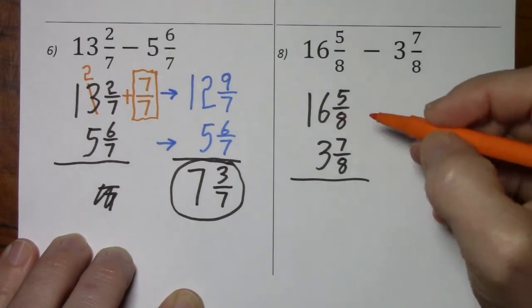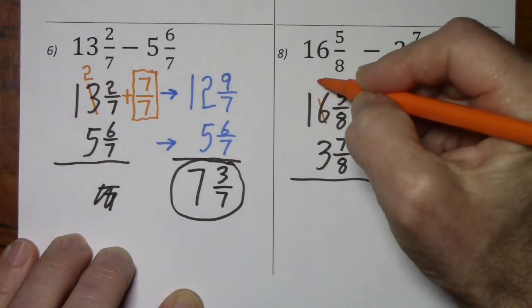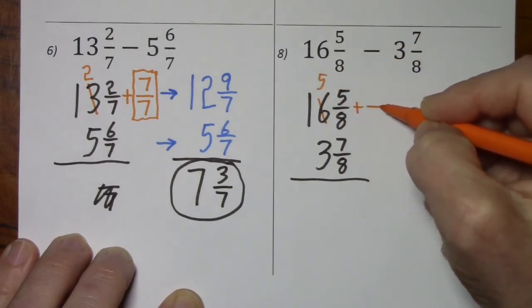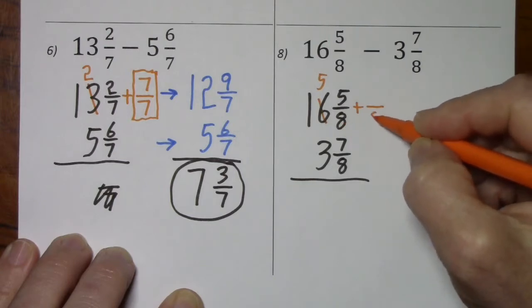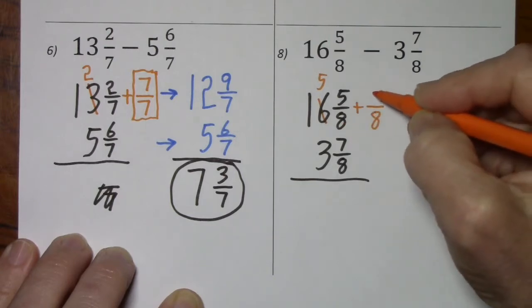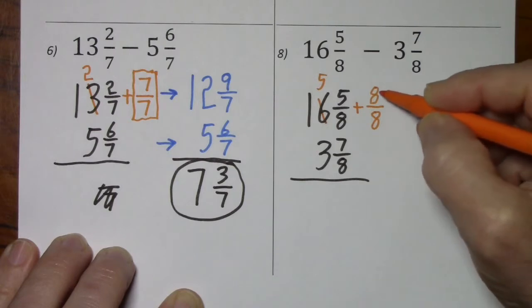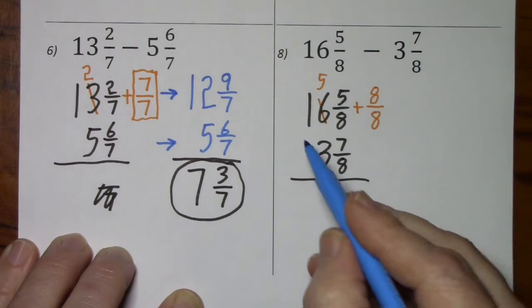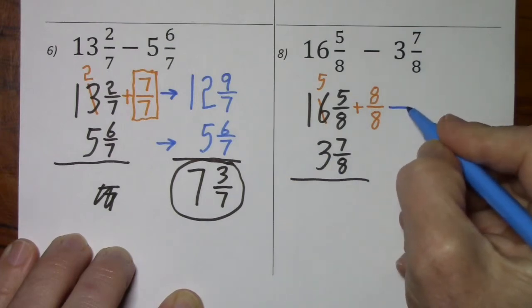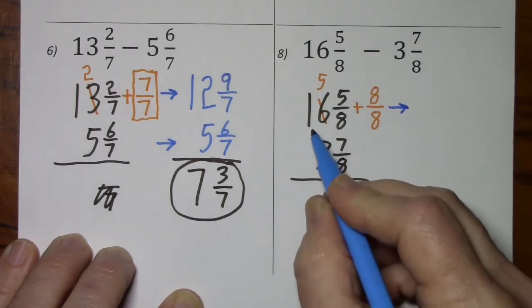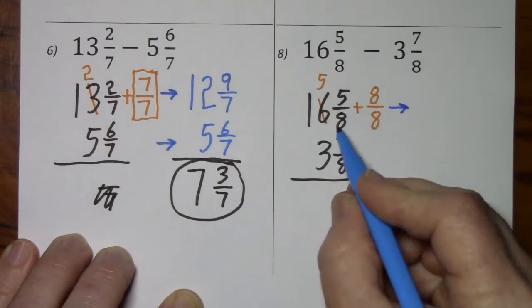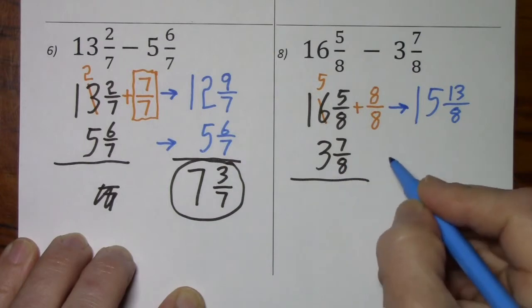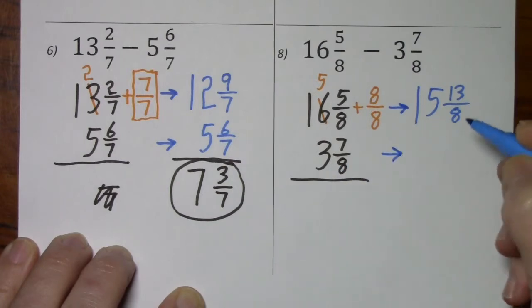So we'll need to borrow 1 from the 6. This becomes a 5. And we add the 1 to the fraction here, which means we need a denominator of 8 and thus a numerator of 8, because 8 eighths is equivalent to 1. Now this is a lot to look at, so we'll rewrite it. 15 and 13 eighths. And we'll just bring over the 3 and 7 eighths.